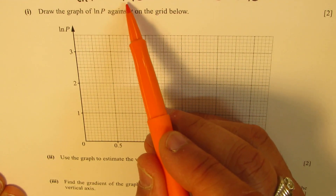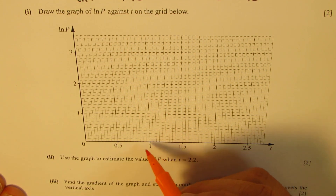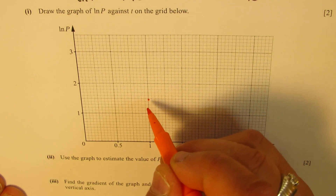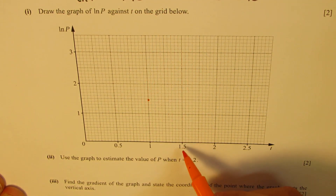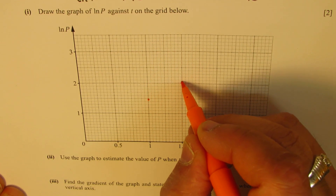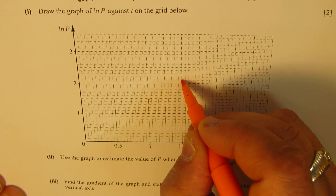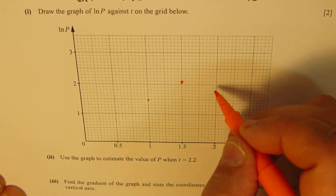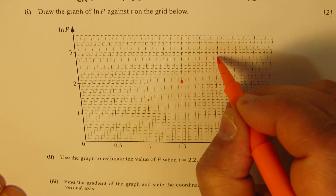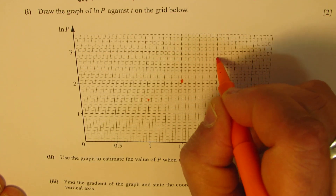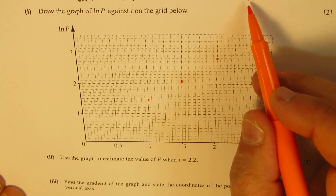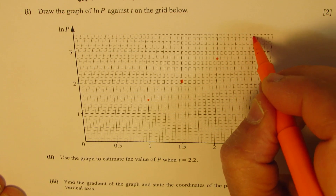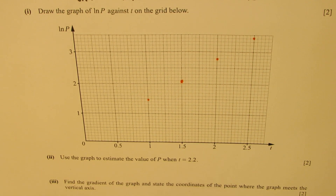The first point is (1, 1.48) — here is T=1, and 1.48 is just shy of 1.5. Then (1.5, 2.12) — 2.12 is here. Then (2, 2.76) — 2.76 is closer to 8 on the scale, so that's here. Then (2.5, 3.4) — that's 3 and then 3.4. So those are the four points we get.